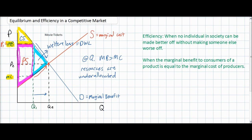Any quantity less than QE — in this case Q1 — is an inefficient allocation of resources towards movie tickets. At Q1, the marginal benefit exceeds the marginal cost, indicating that resources are under-allocated and society would be better off with more resources allocated towards movie tickets. At QE, marginal benefit equals marginal cost, indicating efficient allocation. Next, let's examine what would happen at a quantity greater than the equilibrium quantity, such as Q2.